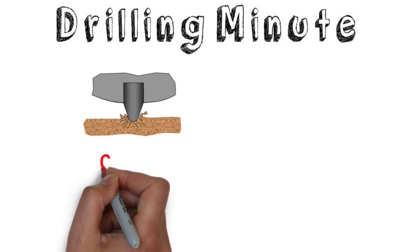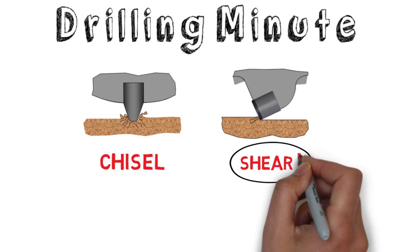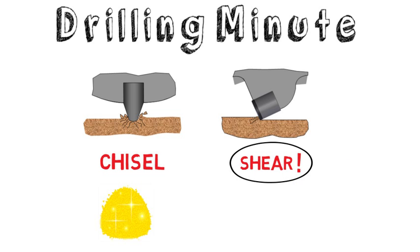It has been known for a long time that shearing is the most efficient way to fail most rock types. But for most of that time, the cutting elements and materials available to cut the rock were either too small or would wear down too fast to drill economically. Then came PDC.